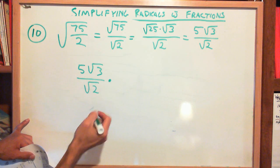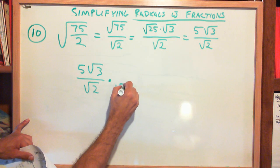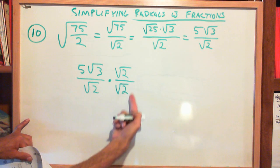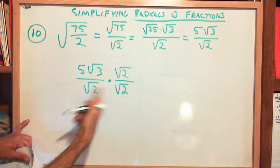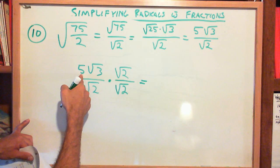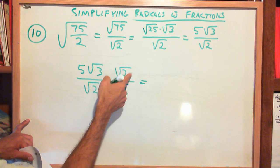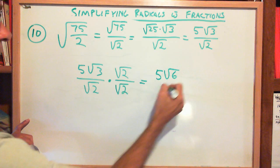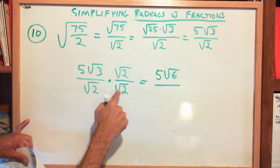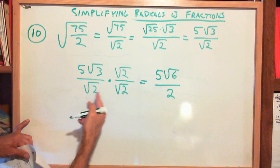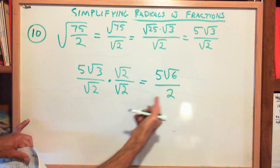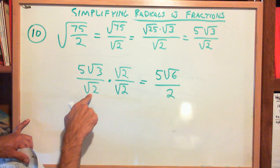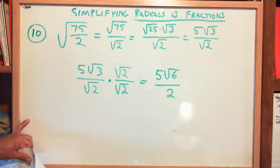To get rid of the square root of 2 in the denominator, I multiply by the square root of 2 over the square root of 2 — which equals 1. Whatever I do to the bottom I must do to the top. The 2 I'm multiplying is under the radical sign, so it multiplies with the 3 to give 6. Result: 5 square root of 6 over 2. Square root of 2 times square root of 2 equals square root of 4, which is 2. When you multiply the same square root by itself, you just get that number without the radical sign.